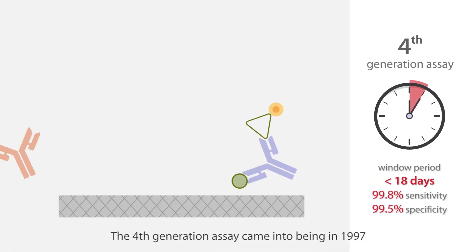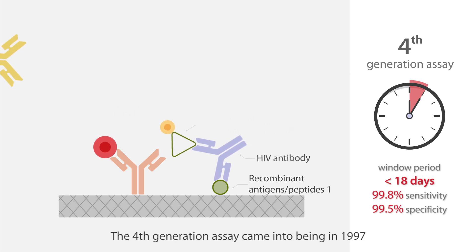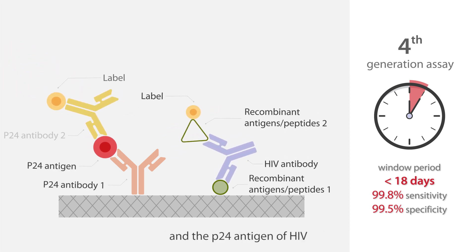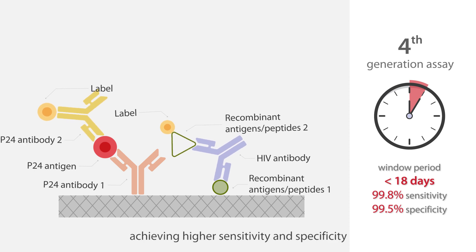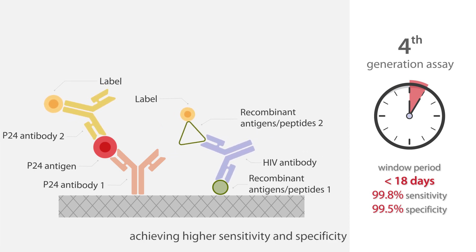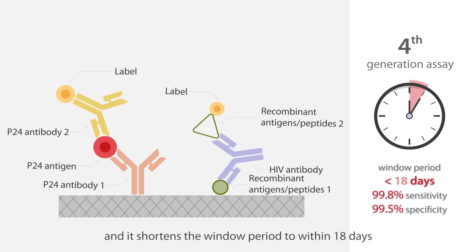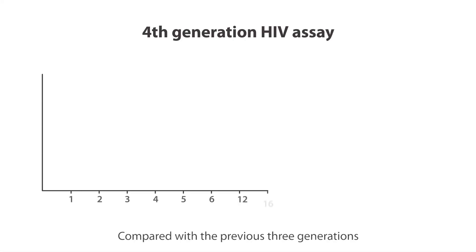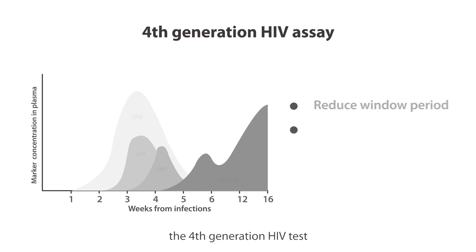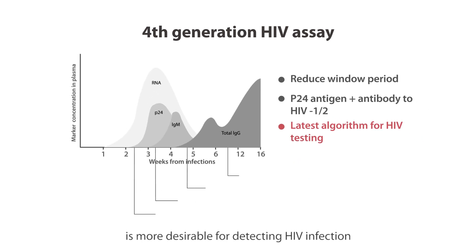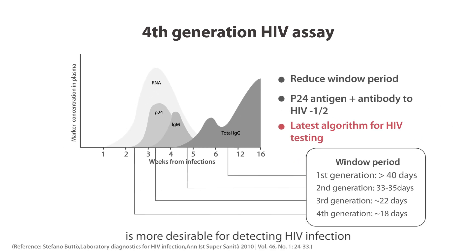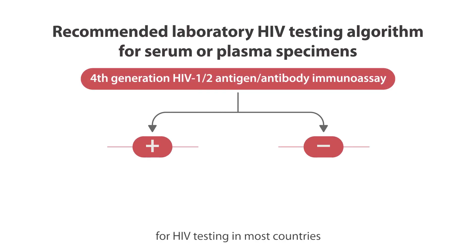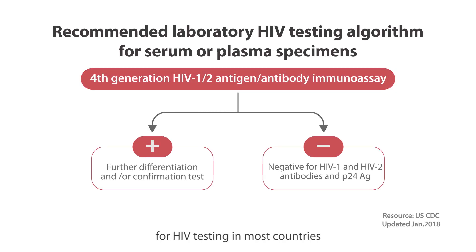The fourth-generation assay came into being in 1997. It is able to capture both the antibodies and the P24 antigen of HIV, achieving higher sensitivity and specificity, and it shortens the window period to within 18 days. Compared with the previous three generations, the fourth-generation HIV test is more desirable for detecting HIV infection. In fact, it is included in the latest algorithm for HIV testing in most countries.